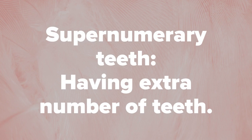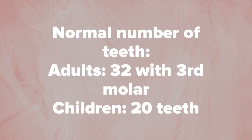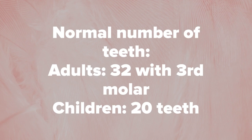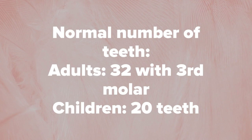Supernumerary teeth, as the name suggests, means having an extra number of teeth. The normal number of teeth for adults is 32 teeth, including the third molar, meaning 16 teeth per jaw. For children, it is 20 teeth, so 10 teeth in each jaw.